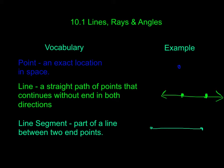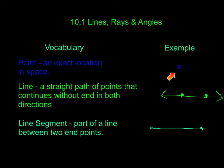The first vocabulary word is a point. A point is an exact location in space. Here's an example of a point. We usually find points on lines like this.